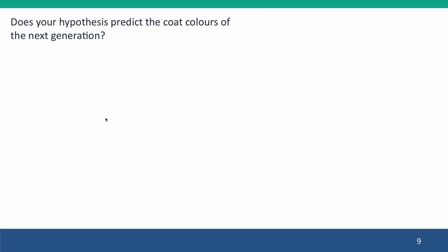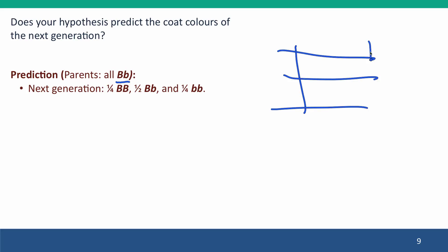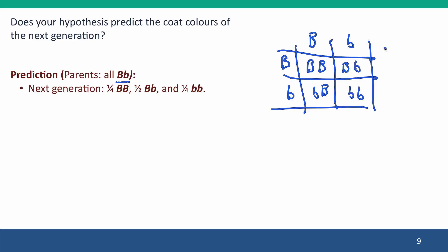Now let's think about the second generation. The parents — the puppies from the first generation — are all Bb and they're black. So the next generation is going to be a quarter BB, a half Bb, and a quarter bb. We can draw a quick Punnett square to confirm: the parents are Bb, their gametes are half big B and half little b, giving offspring BB, bb, and the heterozygotes. Because big B is dominant and causes black, all of those puppies will be black, and these puppies should be spotted under our hypothesis. So that's our prediction — if our hypothesis is right, that's what we should see.